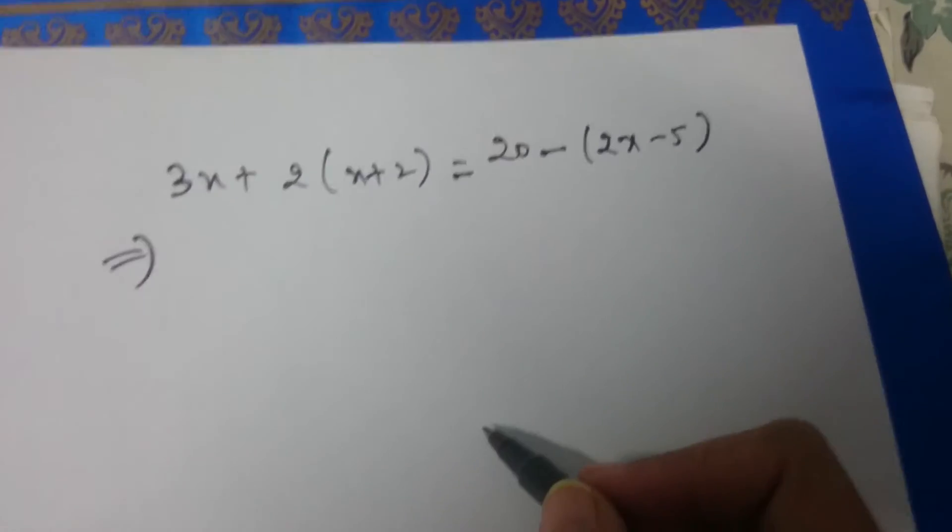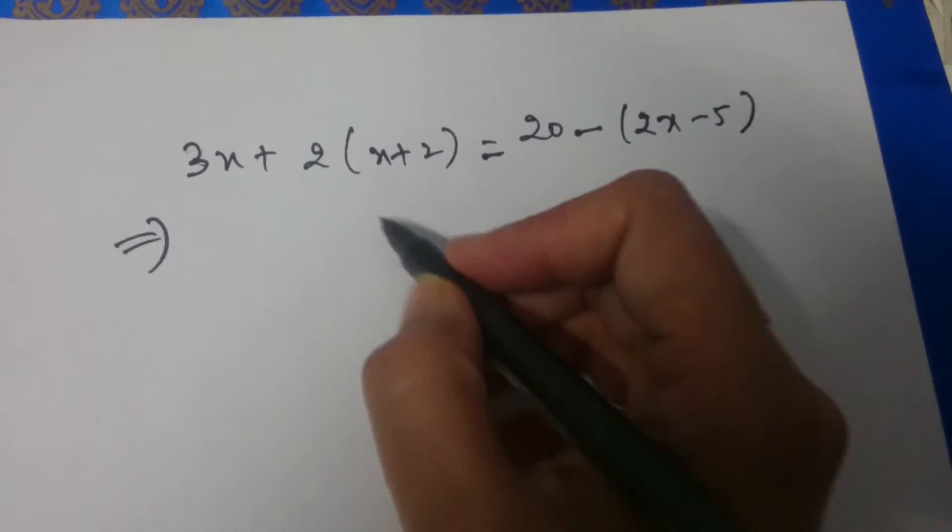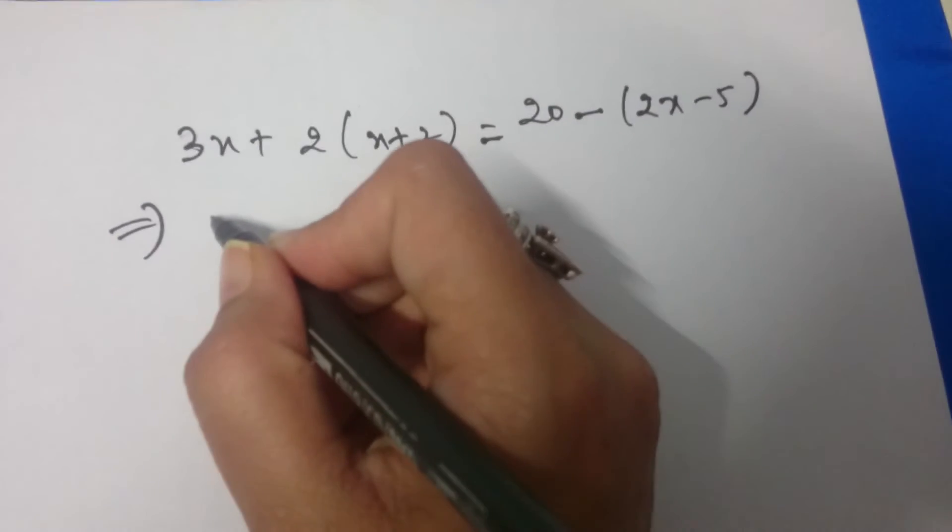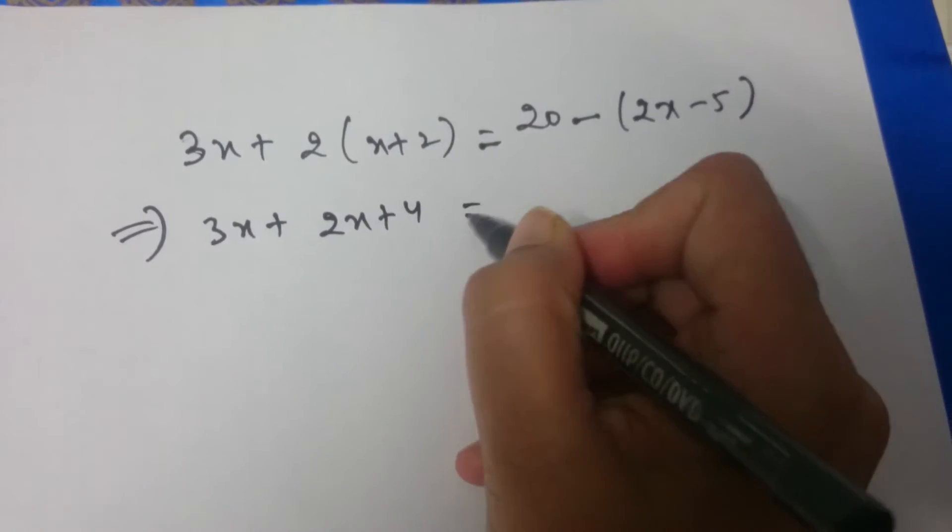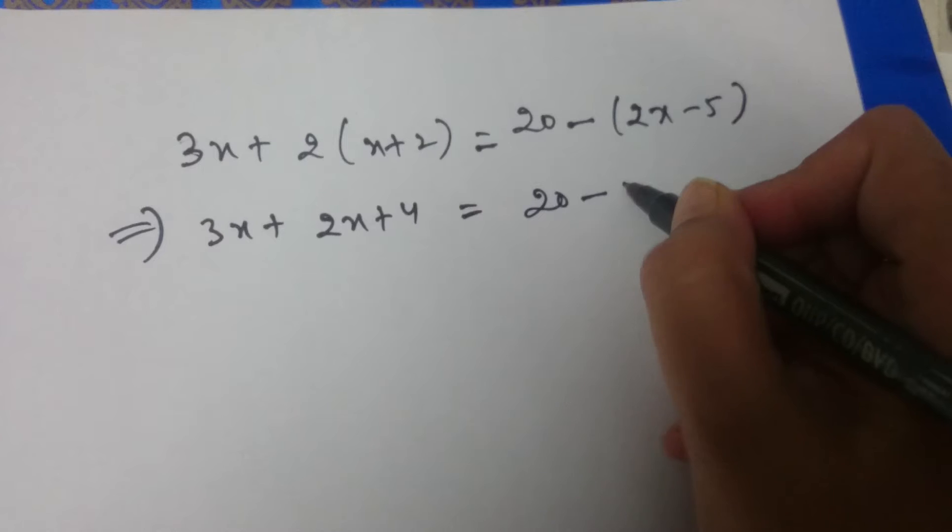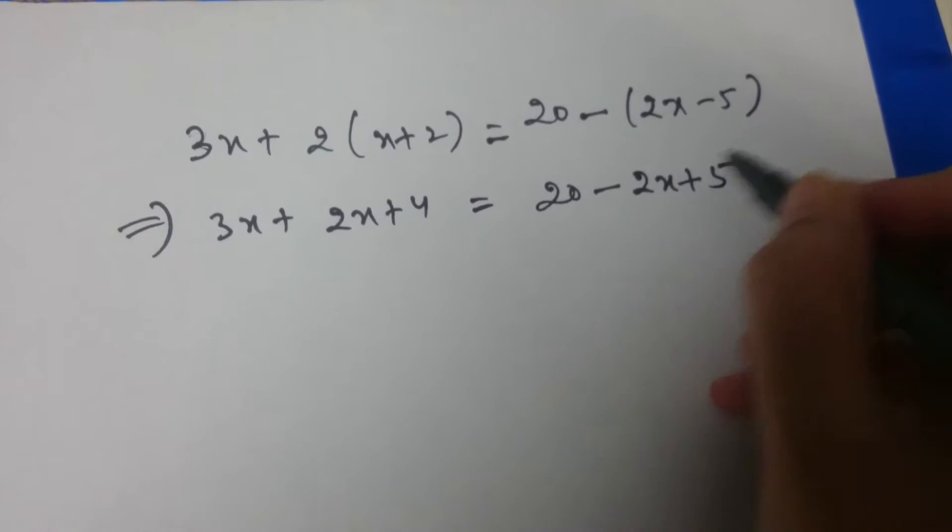We will simplify the expressions on left side and right side first. So, we get 3x plus 2x plus 4 is equal to 20 minus 2x plus 5.